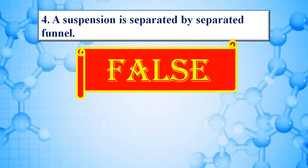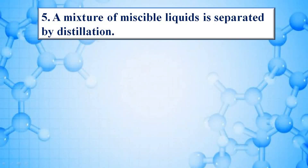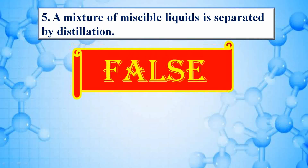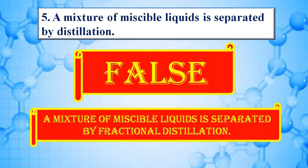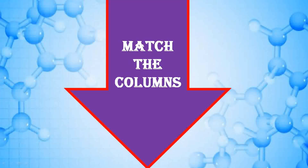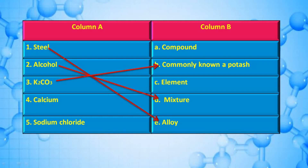A mixture of miscible liquids is separated by distillation — answer is false; correct statement is a mixture of miscible liquids is separated by fractional distillation. Classify the following: steel — alloy, alcohol — mixture, K₂CO₃ commonly known as potash — calcium element, sodium chloride — compound.